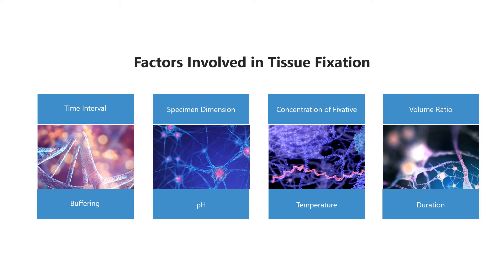Concentration of fixative: the concentration of fixative should be adjusted down to the lowest level possible. Too high a concentration may adversely affect the tissue and produce artifacts similar to excessive heat. Volume ratio: the volume of fixative is important — there should be a 10 to 1 ratio of fixative to tissue. One way to partially solve the problem is to change the fixative at intervals to avoid exhaustion. Agitation of the specimen in the fixative will also enhance fixation.